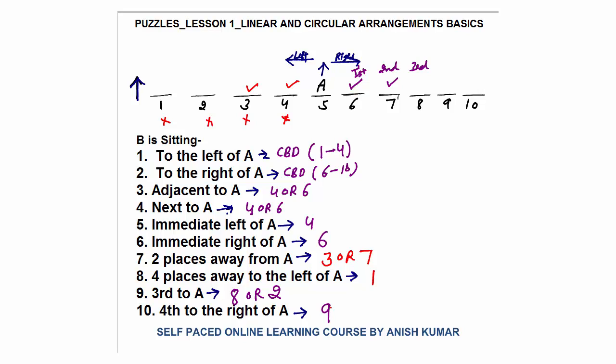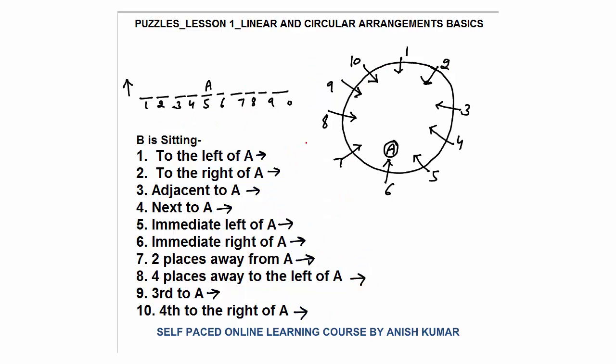That is the basic that will be used in questions. Once you have understood this, you will be able to solve linear arrangement questions in a faster manner. Next, I am going to discuss circular arrangement. Here I have made a circular table where ten persons are sitting, and all persons are facing towards the center. In circular arrangement there can be two types of questions — one where persons face the same direction, either towards the center or away from center.